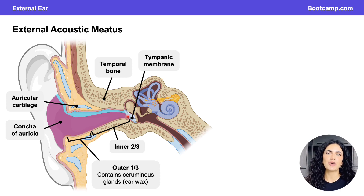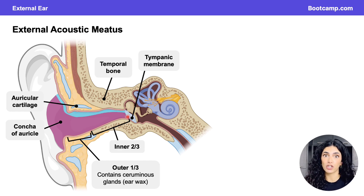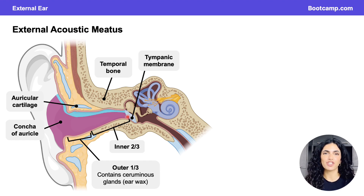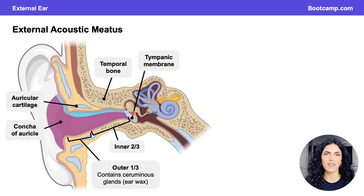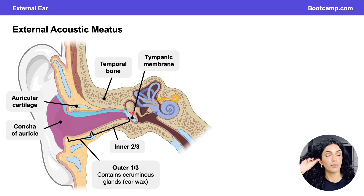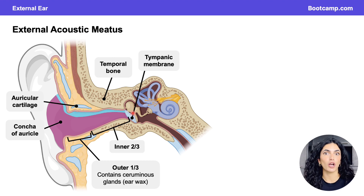An important point about the external acoustic meatus is that it doesn't travel in a straight direction medially — it takes some slight turns. It passes upward and anteriorly, then turns more posteriorly, then anteriorly again, and finally descends slightly to reach the tympanic membrane. That's why a physician will pull the ear superiorly, posteriorly, and laterally when examining the external acoustic meatus.